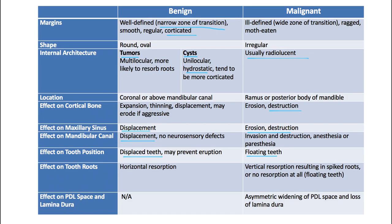For the effect on tooth roots, benign lesions tend to cause horizontal resorption, while malignancies tend to cause vertical resorption resulting in spiked roots. If there's not much root resorption but more bone destruction, you get that floating teeth phenomenon. For the effect on the PDL space and lamina dura, malignancies tend to cause asymmetric widening of the PDL space and loss of the lamina dura.